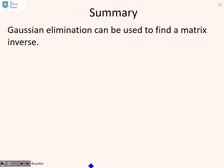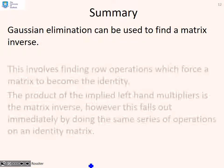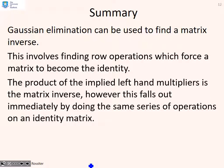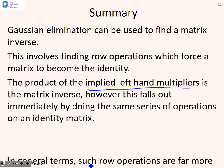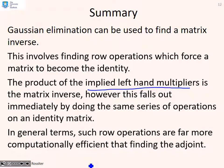In summary: Gaussian elimination can be used to find a matrix inverse. This involves finding row operations which force a matrix to become the identity. The product of the implied left-hand multipliers is the matrix inverse; however, this falls out immediately by applying the same series of operations to an identity matrix. In general, doing such operations is far more computationally efficient than finding the adjoint, as covered in a previous video.